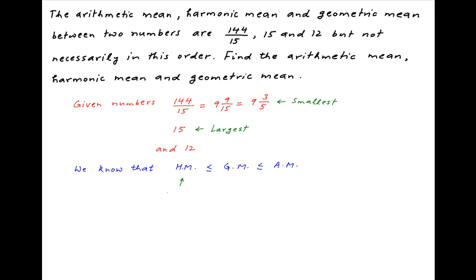Therefore, the smallest of the three numbers, 9 whole 3 upon 5, must be the harmonic mean, and the largest of the three numbers, which is 15, must be the arithmetic mean.